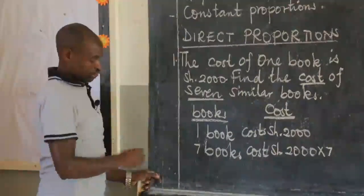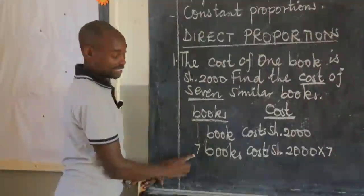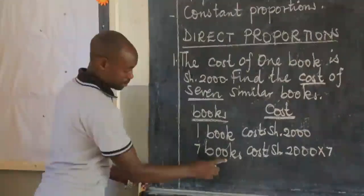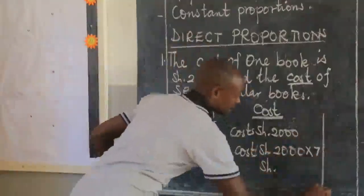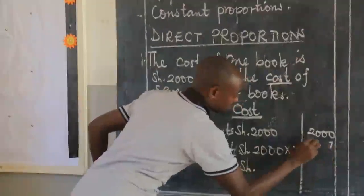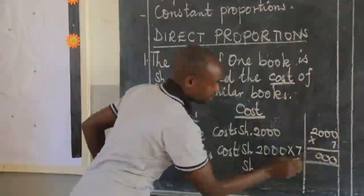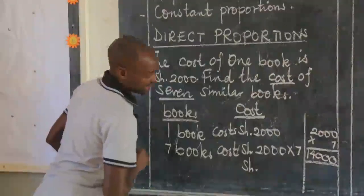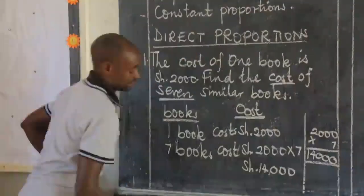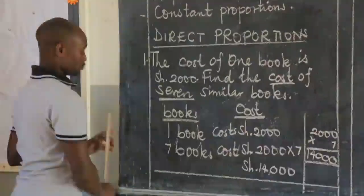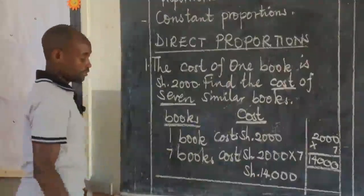You are going to add the cost of one book seven times, but the simpler way is by multiplying. Therefore, when you buy seven books, they will cost 2,000 shillings times seven. Side work: 2,000 multiplied by seven — seven times zero is zero, seven times zero is zero, seven times zero is zero, seven times two we get 14. So we shall have 14,000 shillings. When you buy one you pay 2,000; when you buy seven, it will cost you 14,000 shillings.